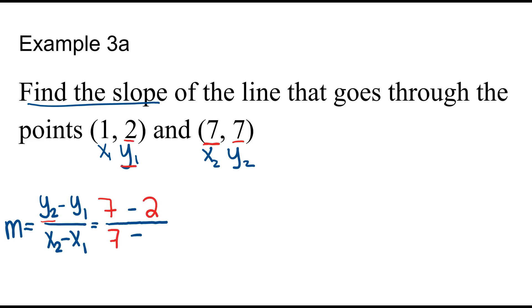For x2, 7. x1, 1. I still draw that fraction bar first. Remember order of operations. We're going to do the top first. 7 minus 2 is 5. 7 minus 1 is 6. They don't have any common factors so the slope is 5 over 6.